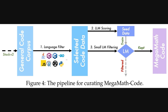So that was the Web Data Pipeline. Figure four shows how they built the MegaMath Code part. Instead of Common Crawl, they start with Stack version two, which is a general code corpus. First, they filter this down to specific programming languages useful for math and science — like Python, C++, R, and a few others. Then they use a small language model, which they trained using some LLM-scored seed data, to filter through all that selected code, keeping the pieces relevant to math to form the final MegaMath Code dataset.